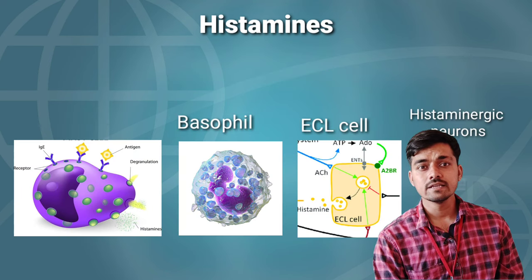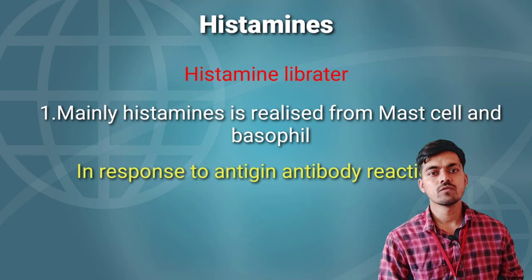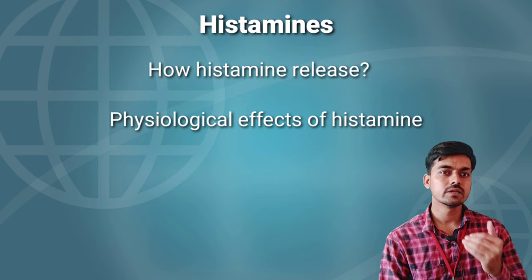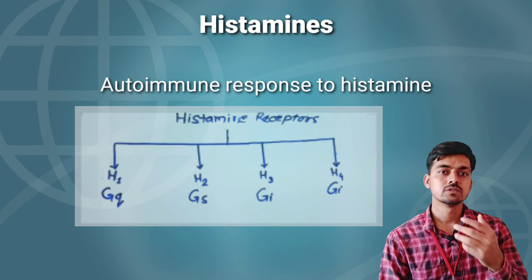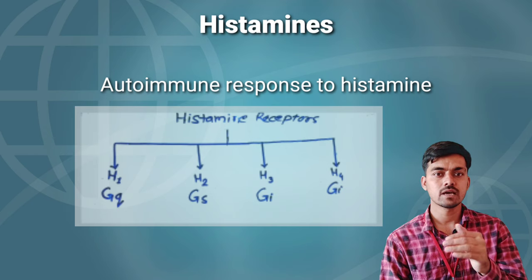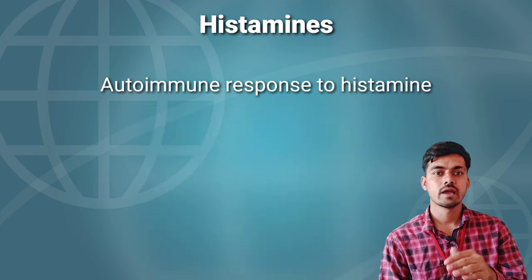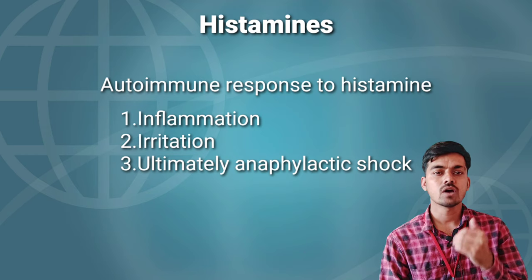After histamine is released into circulation, it attaches to histaminergic receptors in the body, producing inflammation, irritation, and anaphylactic shock — allergic reactions at the affected site. We will discuss how this mechanism works using an animation.